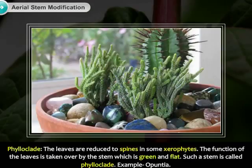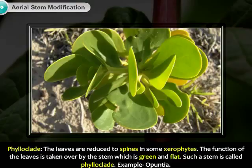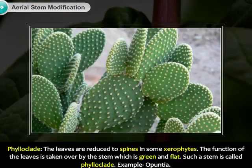3. Phylloclade: The leaves are reduced to spines in some xerophytes. The function of the leaves is taken over by the stem, which is green and flat. Such a stem is called a phylloclade. Example: Opuntia.